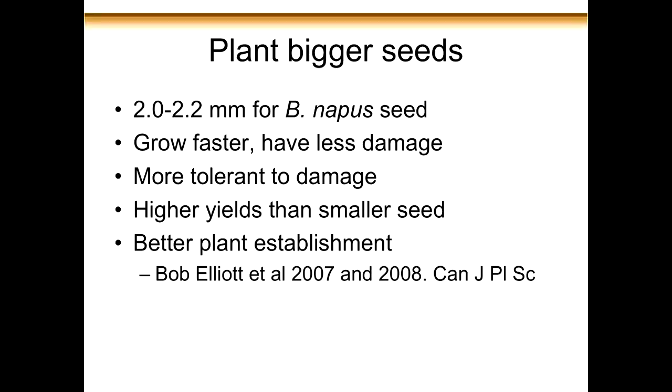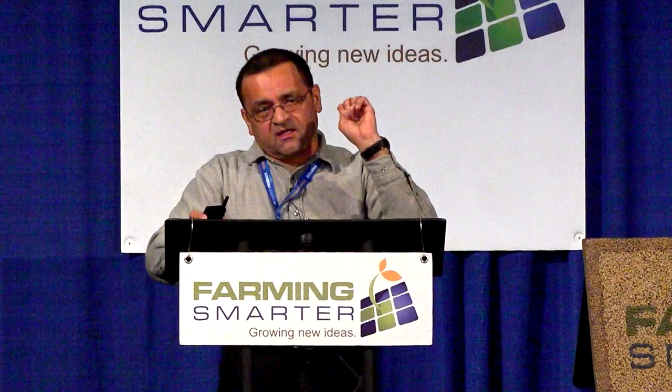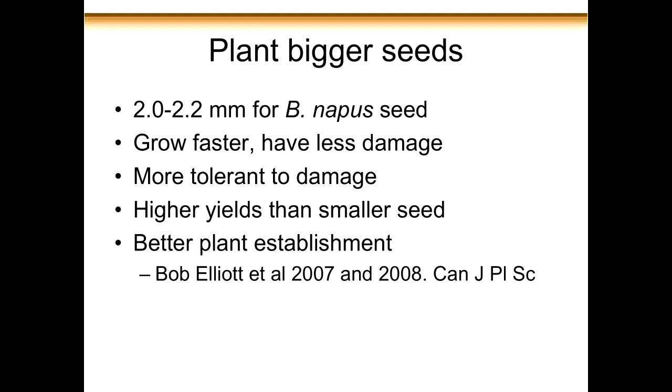Bob Elliott did a lot of work on flea beetles and seedling vigor, and has a series of papers showing very clearly that if you plant bigger seeds you will have less damage and protect your yield. Bigger seeds grow very fast — they can escape the flea beetles by growing faster, and you will also have more vigorous seedlings that can tolerate the feeding much better. He showed very clearly that you can have higher yields by selecting for bigger seeds. I'm not sure how you do this in practice — would you ask your seed provider to only sell you bigger seeds? They'd probably charge you more, but that's one strategy.